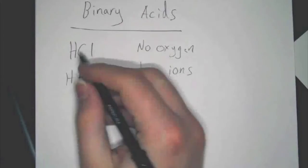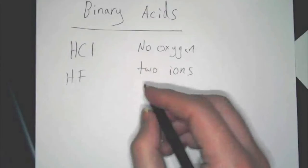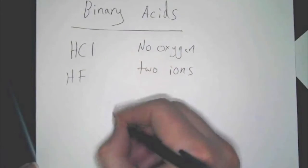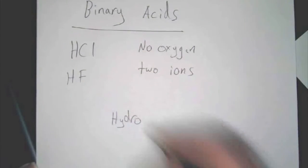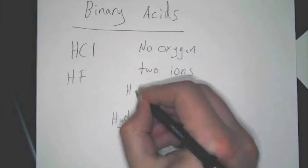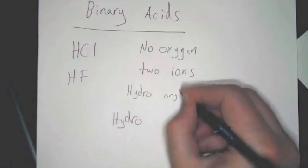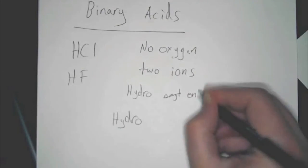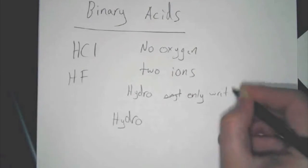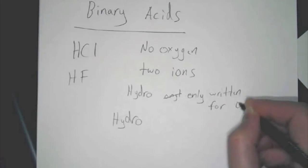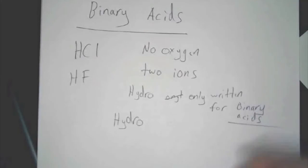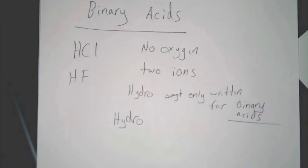All you need to do, you see you have H. So, anytime you have H, when it's binary, you write hydro. So, you might even want to make a note that hydro is only written for binary acids. If you're going to goof up anything, it'll be that.